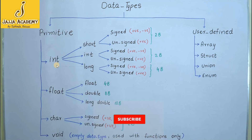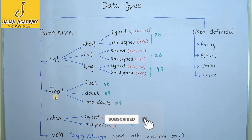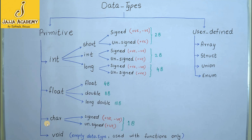The four categories of primitive data types are: number one, integer data type; second, float data type; third, character data type; and the last one is void data type.